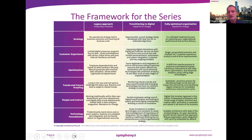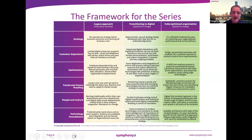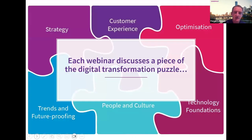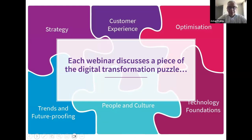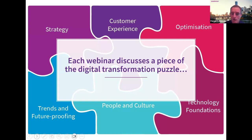Jumping into the series itself — this is the 11th webinar that we've run. We run it around our digital maturity framework. There are six areas down the bottom; we believe each of those areas is related to digital transformation, part of the jigsaw puzzle. Today is all about trends and the future, which is down in the bottom corner, and we've obviously got a wonderful panel to help us navigate that and tell us what they see is going to happen in the future.